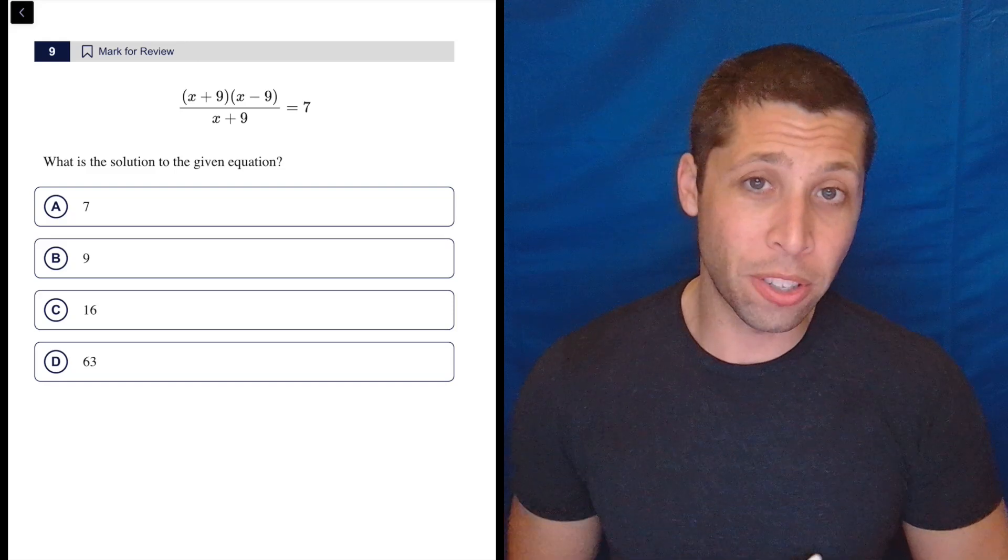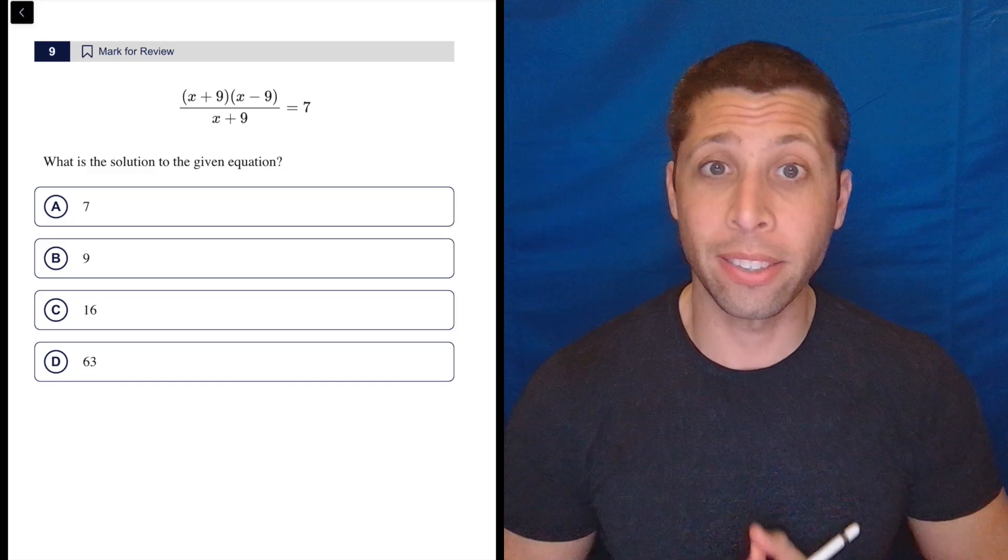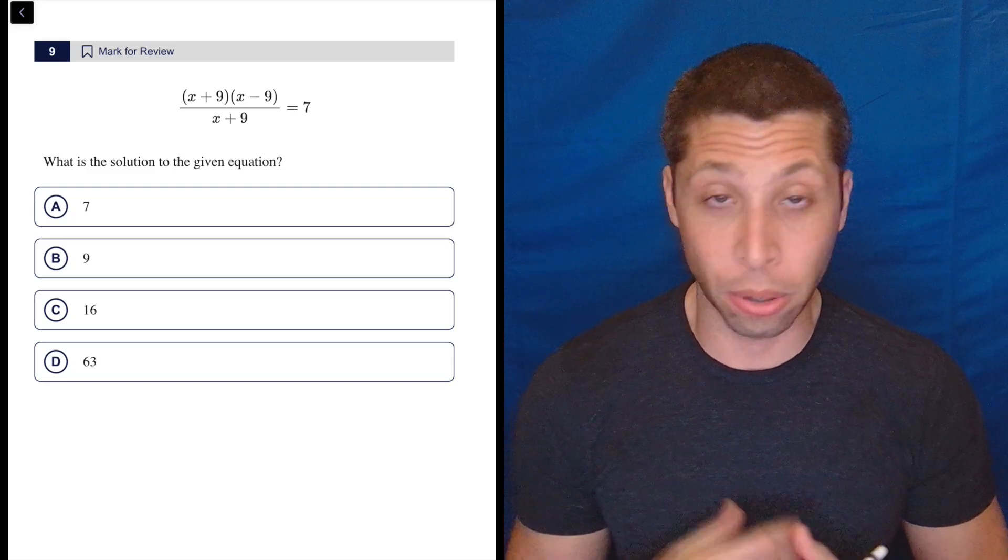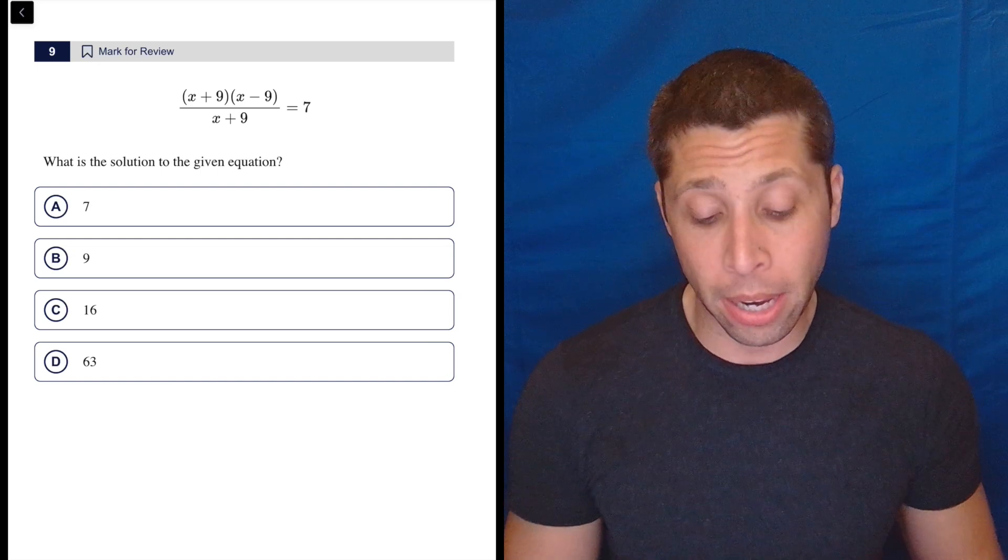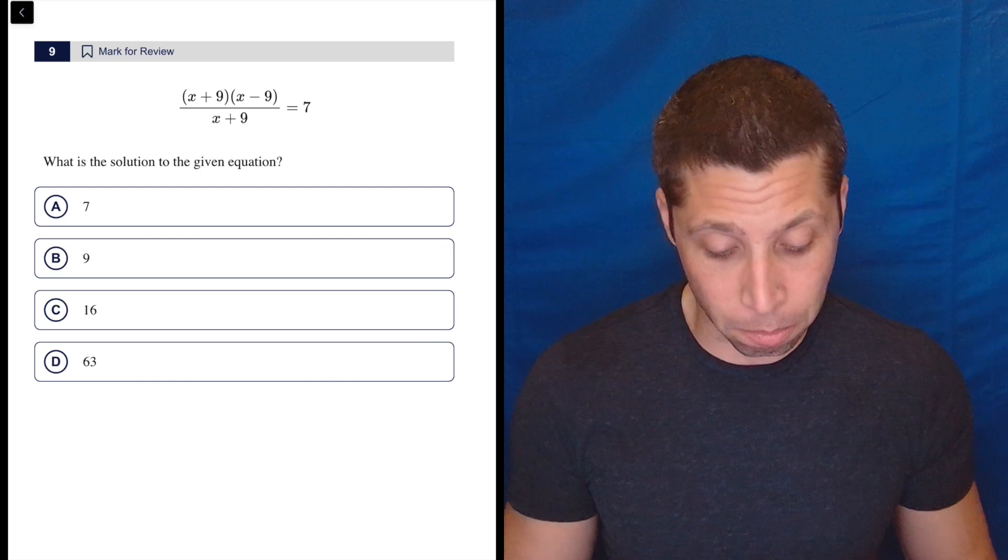Lots of ways to do this. We could throw this into Desmos and do the vertical line test and get some values for x. Or if there's only one value, then we would see that as a vertical line. But we also just have answers here, right? So just plug them in.